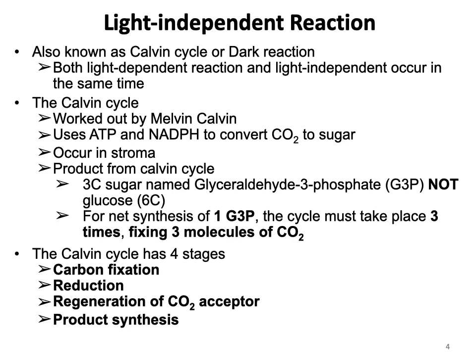The real product of the Calvin cycle is actually not glucose, but it is glyceraldehyde 3-phosphate, or in short, we call it G3P. Please remember that the cycle needs to take place three times to complete one reaction in order to produce one G3P.